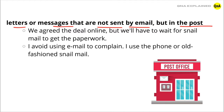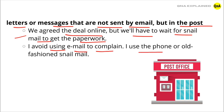Let's understand through some examples. First one: we agreed the deal online but we will have to wait for snail mail to get the paperwork. Next one: I avoid using email to complain, I use the phone or old-fashioned snail mail.